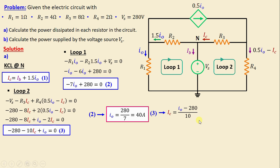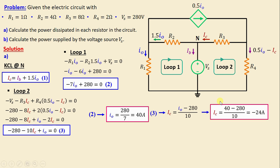Replacing IO with its value, we obtain IC = (40 − 280) / 10, giving IC = −24 amps.